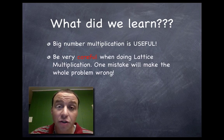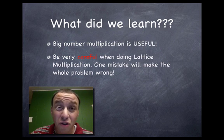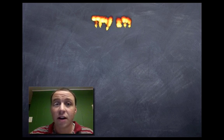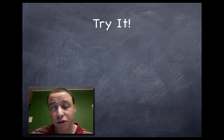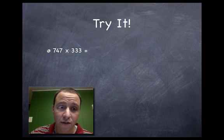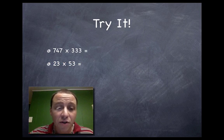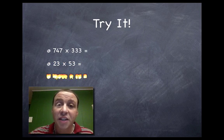Your teacher sees the wrong answer, it's the wrong answer. It's not like you get partial credit for a multiplication problem. So if you're going to take the time to do this, really be careful and make sure that you do it the right way. And the only way to make sure you know how to do it is to try it. So I'm going to give you a bunch of problems here that I want you to try. First one: 747 times 333. Your second one: 23 times 53.